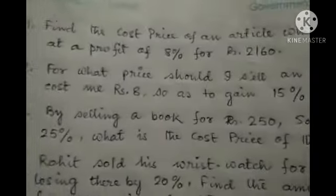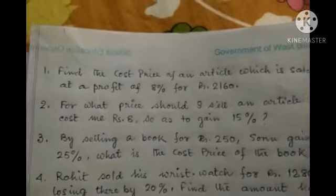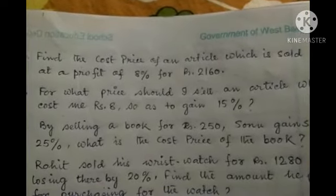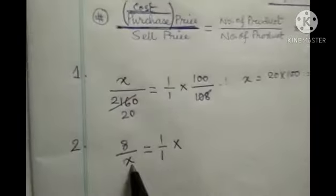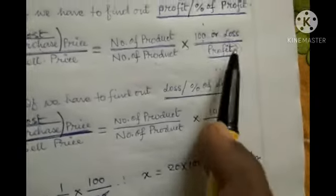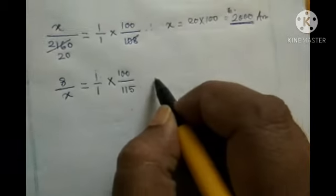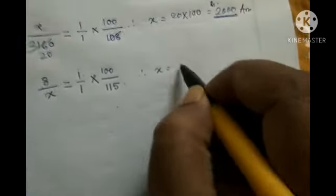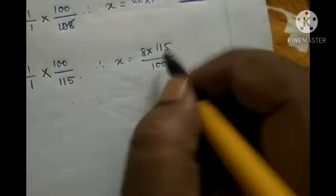Problem 2: For what price should I sell an article which cost me rupees 8 so as to gain 15%? Gain is 15%, meaning profit is 15%, and cost is rupees 8. We write 8 divided by x (x is the sale price we need to find), equal to 1 divided by 1 into 100 divided by profit, which is 15%, giving 115.